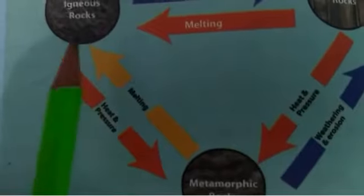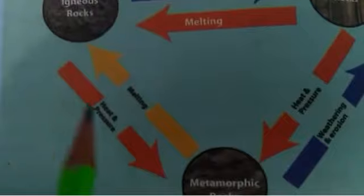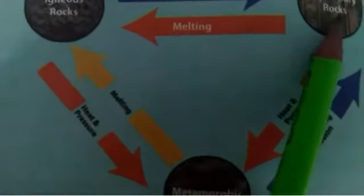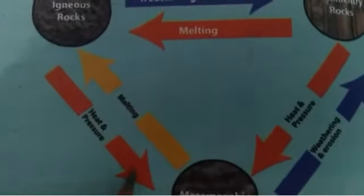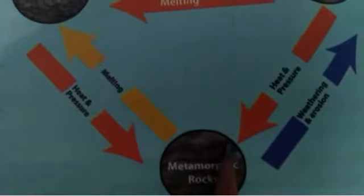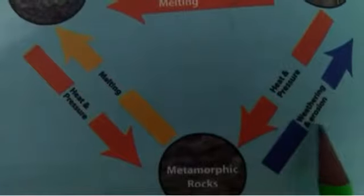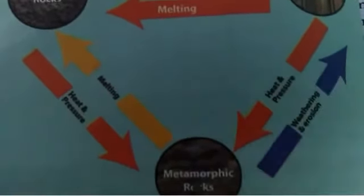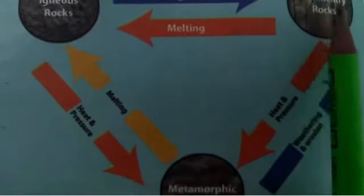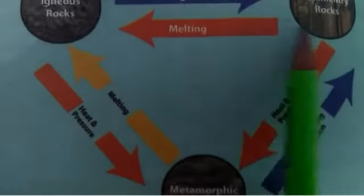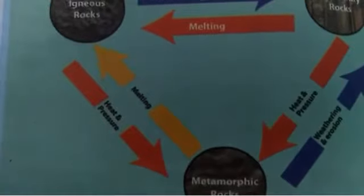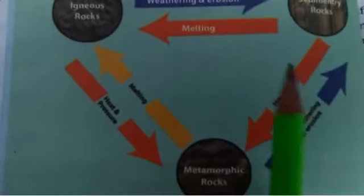When metamorphic rocks melt, they are converted back into igneous rocks. Igneous rocks can also be converted into sedimentary rocks through weathering and erosion, or into metamorphic rocks through heat and pressure. Metamorphic rocks through weathering and erosion are also converted into sedimentary rocks, and sedimentary rocks through melting are converted into igneous rocks. This entire process is called the rock cycle.